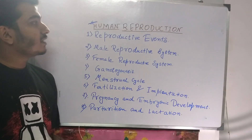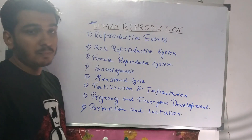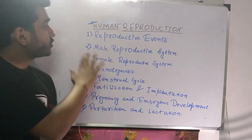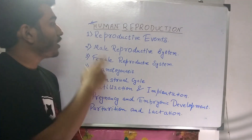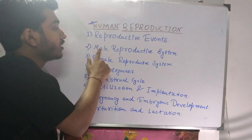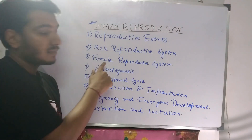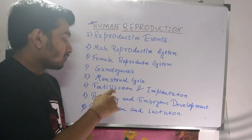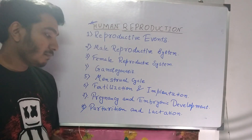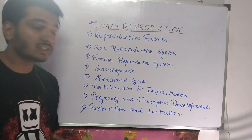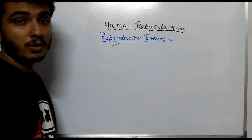So let's start today with the first chapter: Human Reproduction. Let me first go over the topics we are going to cover. First, reproductive events; then the male reproductive system, female reproductive system, gametogenesis, menstrual cycle, fertilization and implantation, pregnancy and embryonic development, and finally parturition and lactation. So now let's start the first topic — the reproductive events.